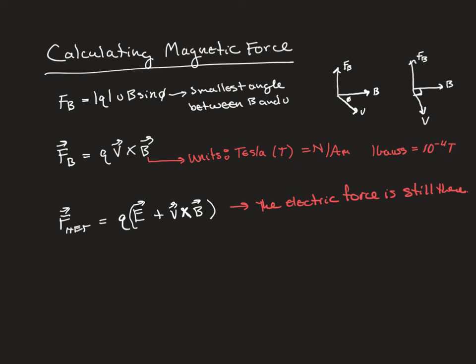The units for magnetic field strength are Tesla, so a newton per amp meter. Another unit that could be mentioned is a gauss. A gauss is 10 to the minus 4 Teslas.